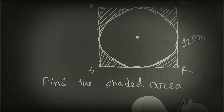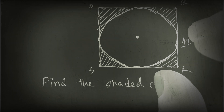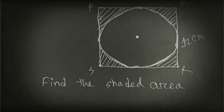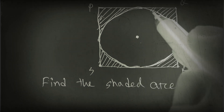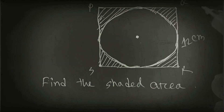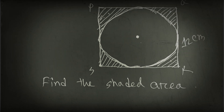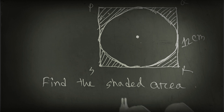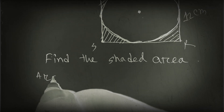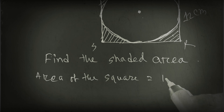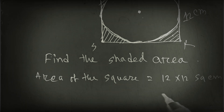Now we are finding another shaded area. The figure includes 12 cm sides and all sides are equal, so it is a square. Inside the square there is a circle and we have to find the full shaded area inside the square. Since all sides are 12 cm, area of the square equals 12 times 12, which is 144 square cm.